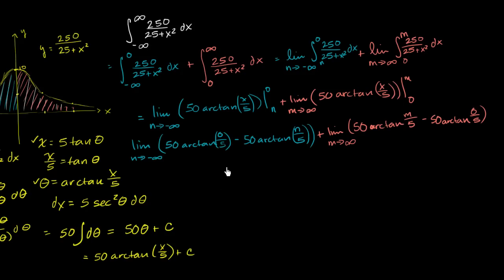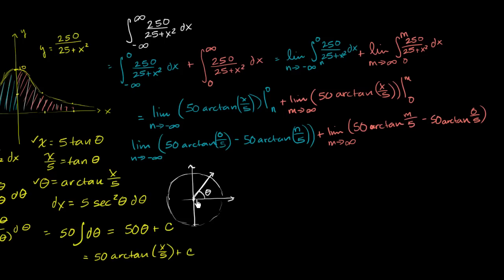To evaluate these, let's think about a unit circle to visualize the arctangent function. One way to think about tangent is the slope of the line defining the terminal side of an angle. So if I want the arctangent of 0, I'm looking for an angle where the terminal side has slope 0 — that's an angle of 0 radians. So arctangent of 0 is 0, making those terms just 0.